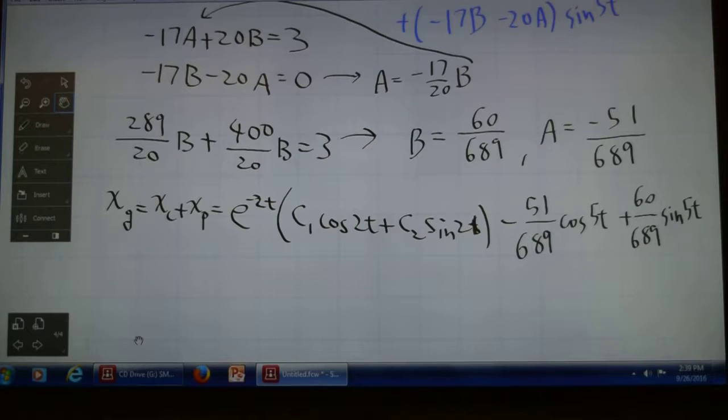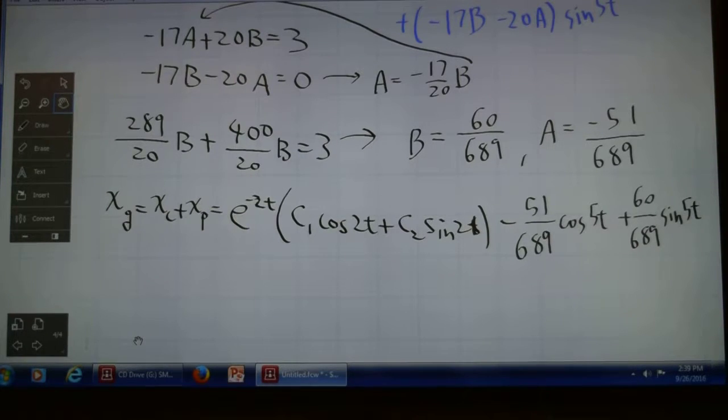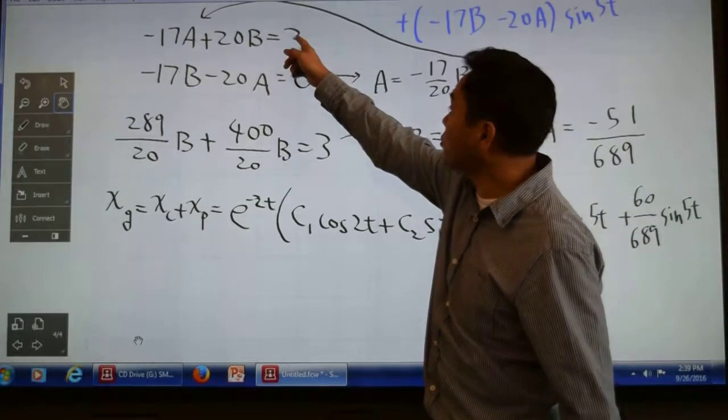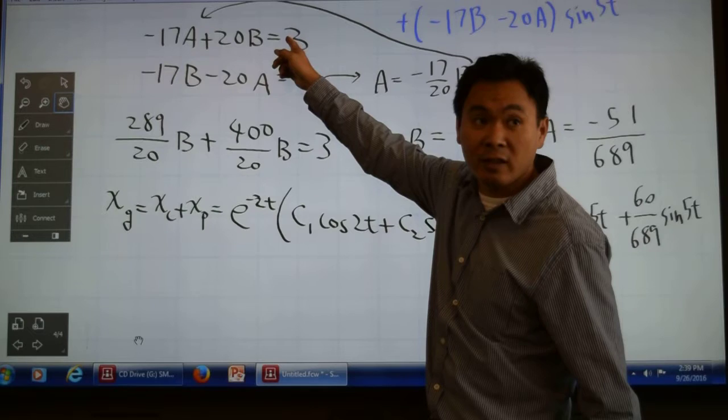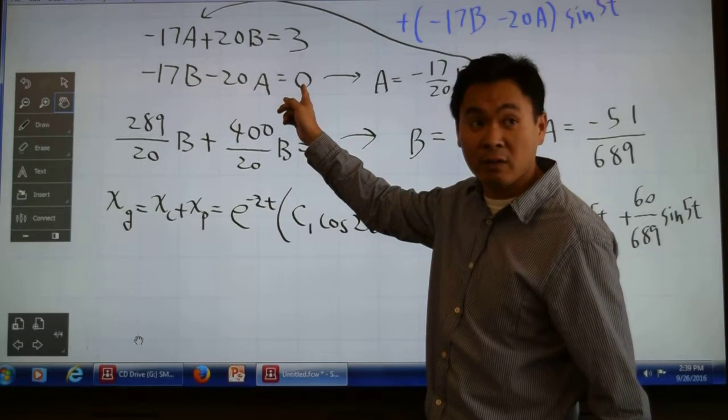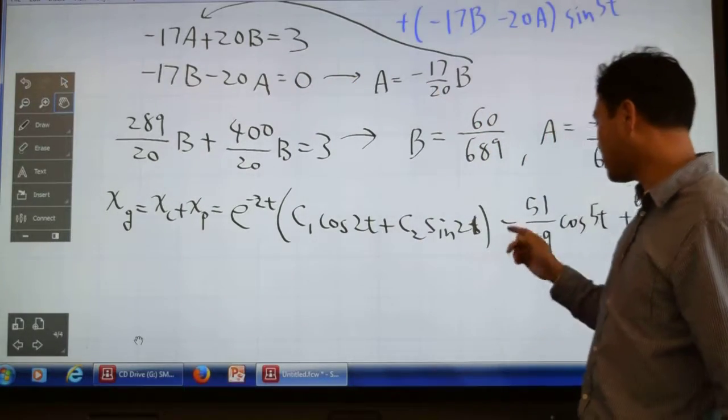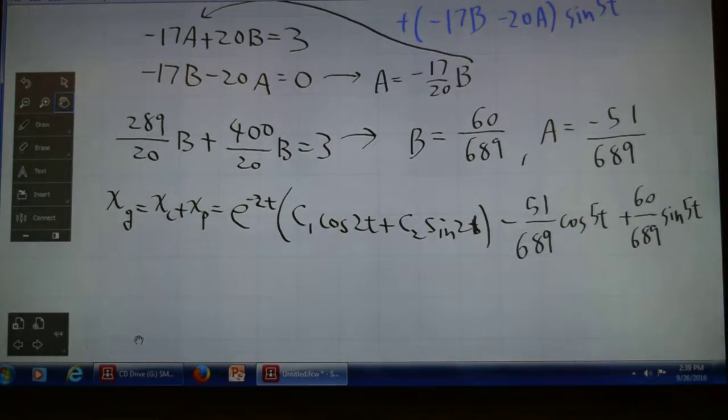When you plugged in A for B, doesn't that equal 0? Yes, I need 3 cos(5t) + 0 sin(5t), so 0 is here. The system is solved.